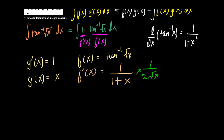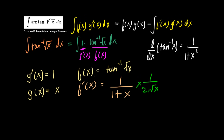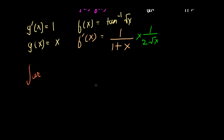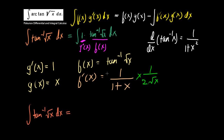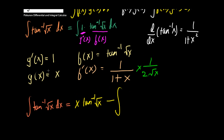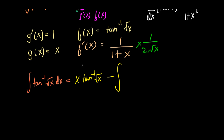Now we are ready to plug everything into the integration by parts formula. We get that the integral of arctan(√x) dx equals f(x)·g(x) minus the integral of f'(x)·g(x) dx, which becomes x·arctan(√x) minus the integral of x over (1+x)·2√x dx.